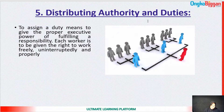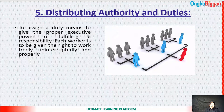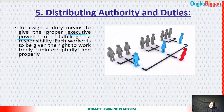Number five is distributing authority and duties. After understanding responsibilities, here comes the term to distribute authority and duties — to assign duty means to give the person the proper executive power of fulfilling a responsibility, the power to execute, to complete the job, to solve the problem, and the power to do the task.